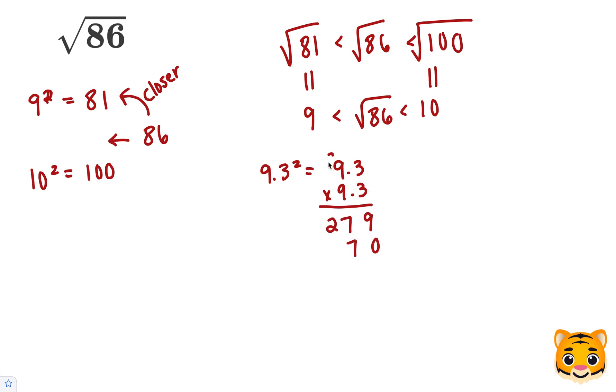and then 9 times 3 is 27, carry our 2. 9 times 9 is 81, plus 2 is 83. We get 9, 14, 6, 8.